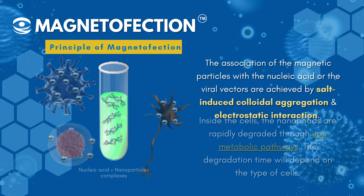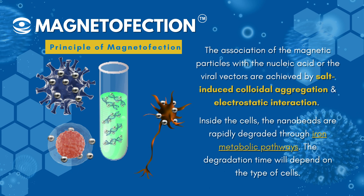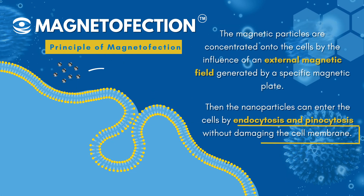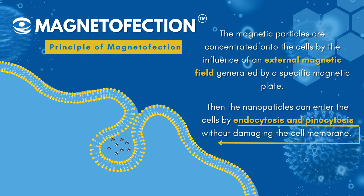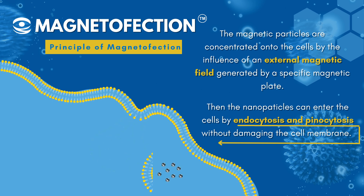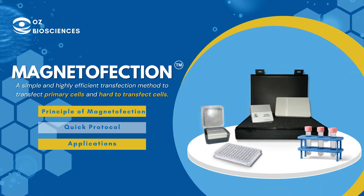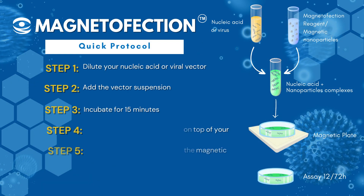Inside the cells, the nanobeads are rapidly degraded through non-metabolic pathways. The degradation time will depend on the type of cells. The magnetic particles are concentrated onto the cells by the influence of an external magnetic field generated by a specific magnetic plate. Then the nanoparticles can enter the cells by endocytosis and pinocytosis without damaging the cell membrane.